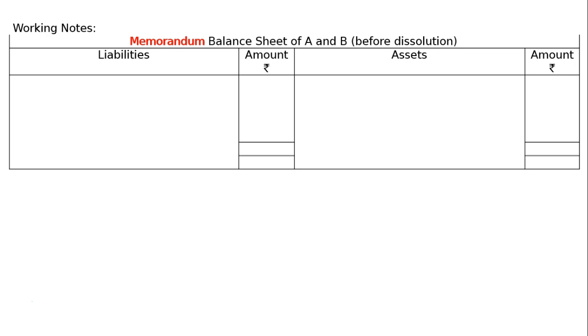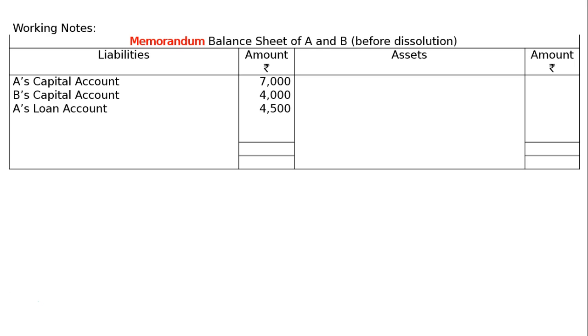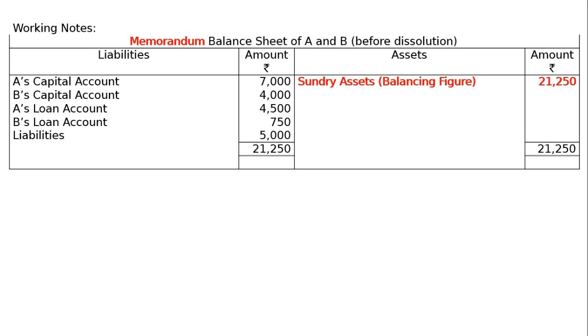Since the value of assets is not given, the working note will be finding the value of assets. That is, working notes — memorandum balance sheet of A and B before dissolution. On the liability side: A's capital rupees 7,000, B's capital rupees 4,000, A's loan rupees 4,500, B's loan rupees 750, and other liabilities rupees 5,000. Total is rupees 21,250. Taking it to the asset side, sundry assets as a balancing figure equals rupees 21,250. So the sundry assets before dissolution was rupees 21,250.